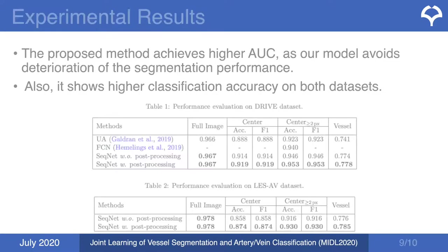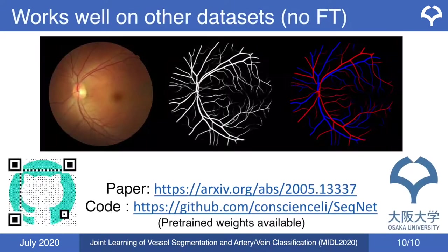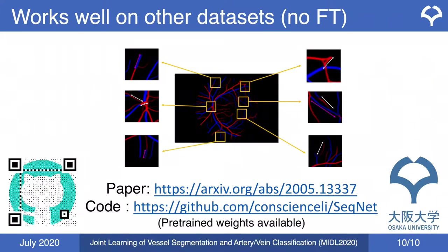This is an example of an image from a different dataset without fine-tuning, showing promising results on unseen images from different datasets. The paper and source code are available online. Please post your questions in the comment section or ask during the live session. Thank you for listening.